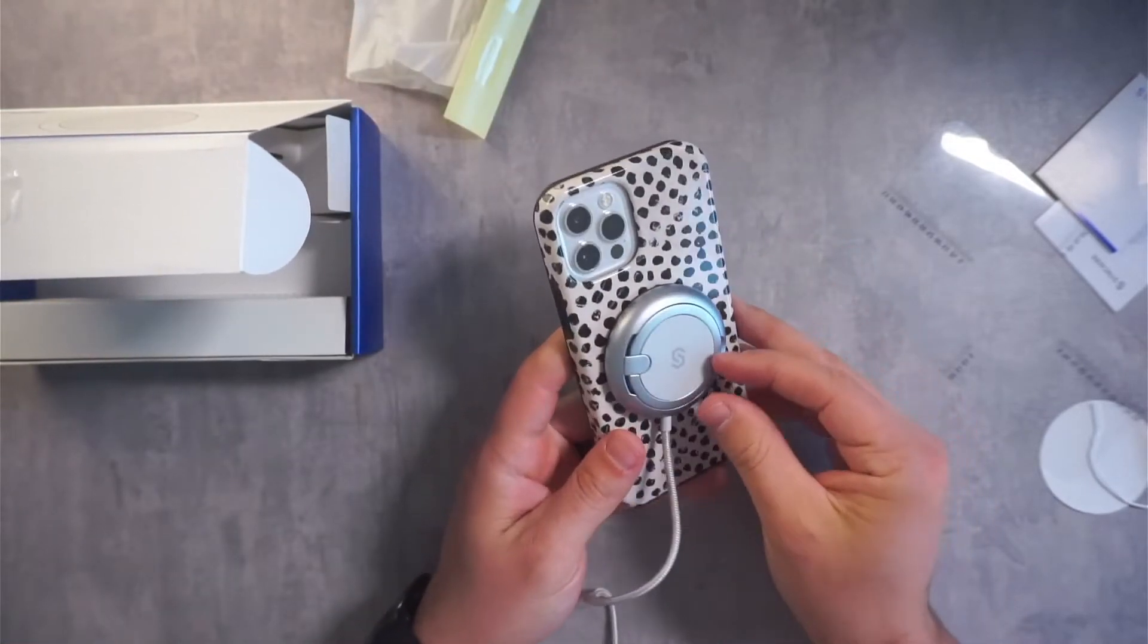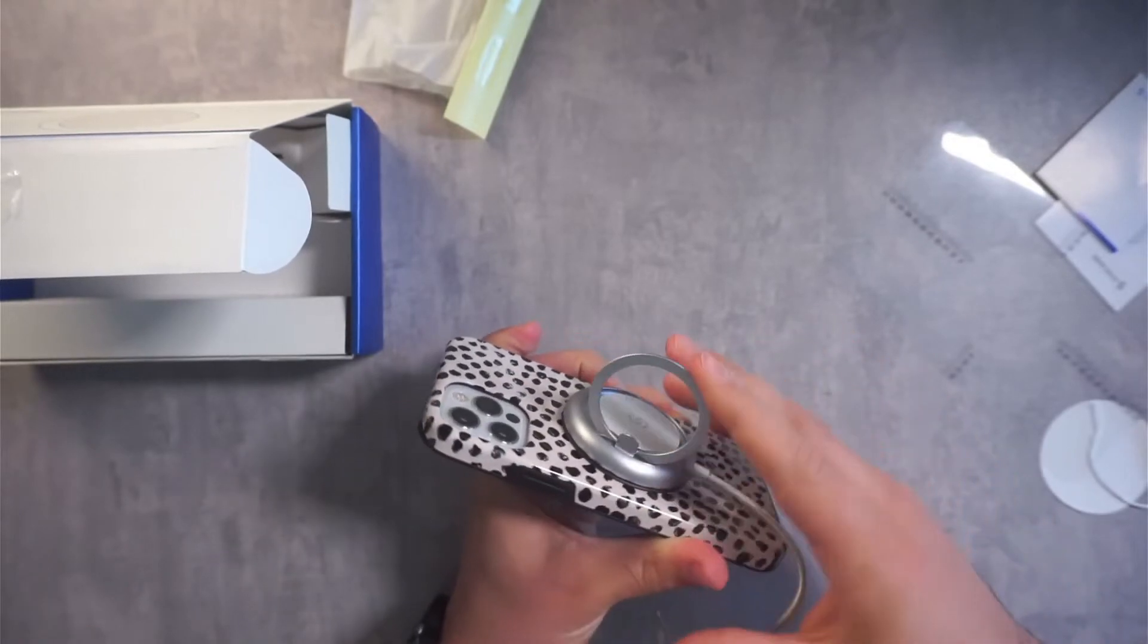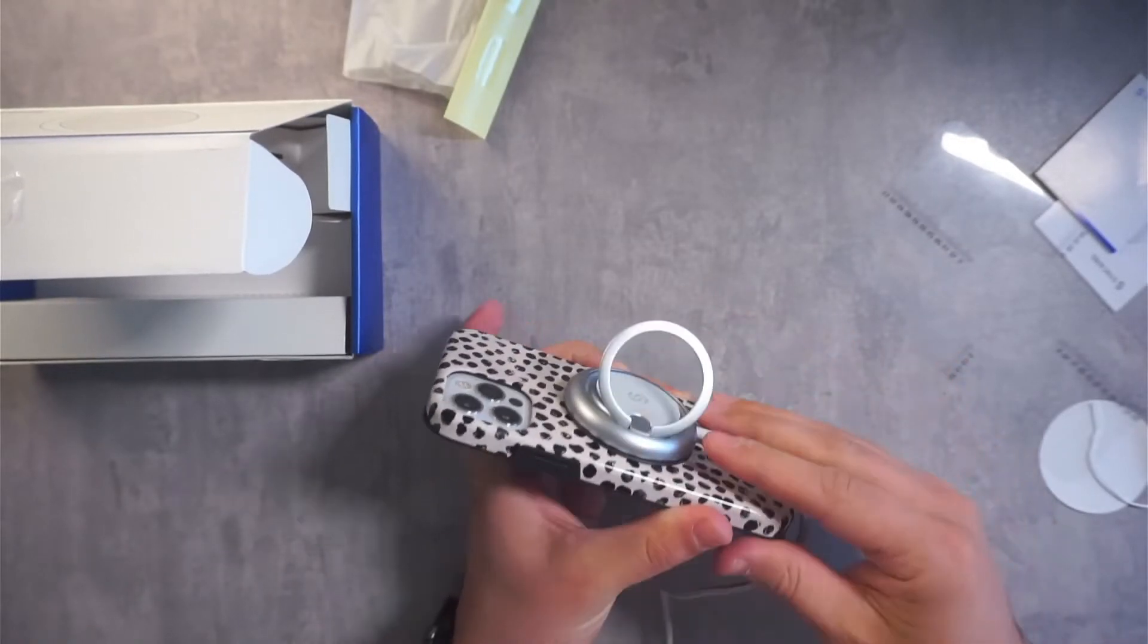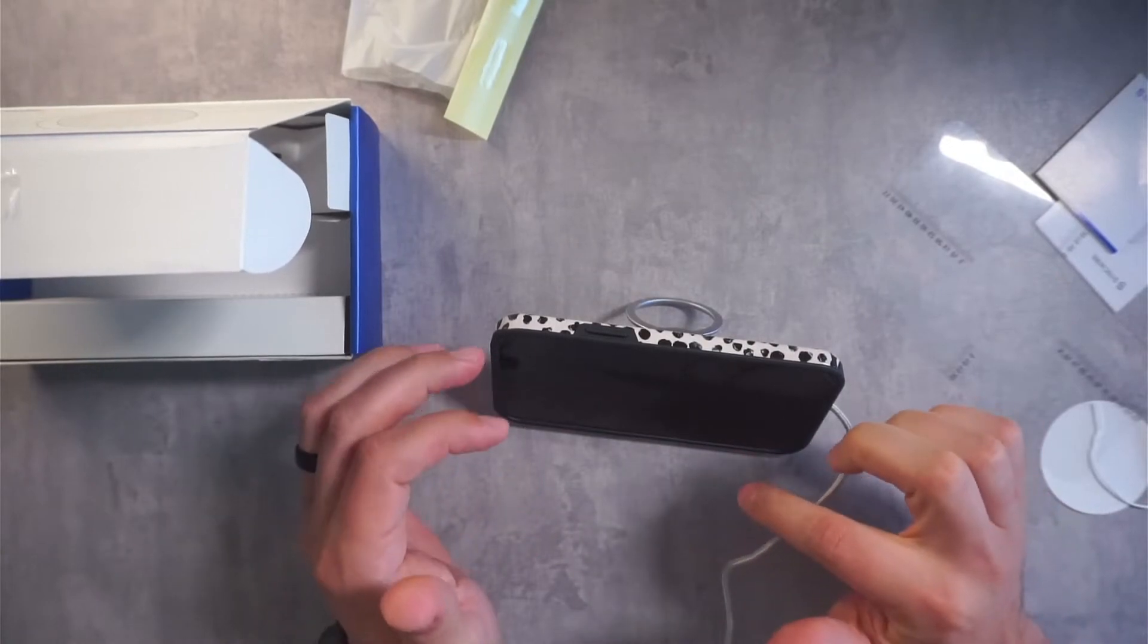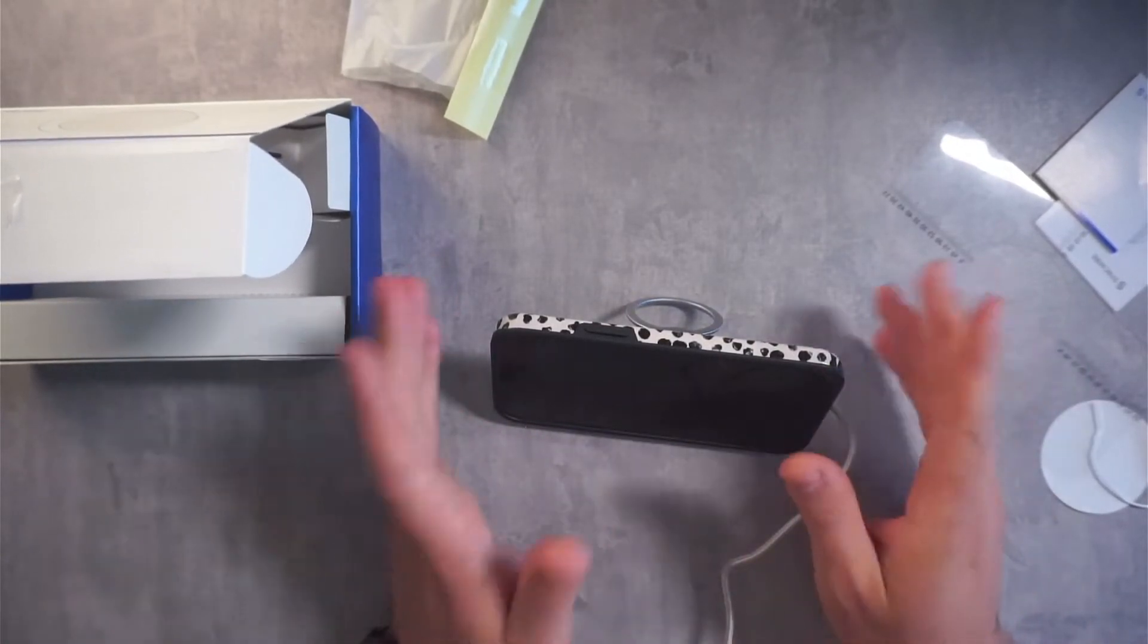This one has a kickstand, which is nice. So if you are sitting there charging your phone or you're at work charging your phone, you can use it as a little kickstand, watch your TV shows, text on it, scroll social media, whatever you want to do.